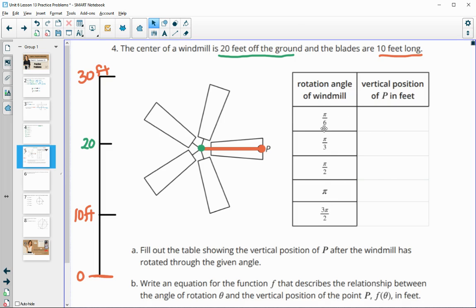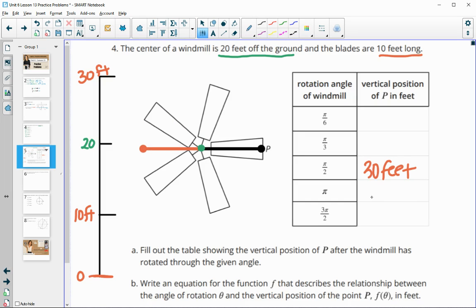So we want to come up with some of these different measures here. So where is this point going to be at pi over 6, at pi over 3, at pi over 2, at pi, and at 3 pi over 2? At pi over 2, it's directly at the top. So at pi over 2, it's going to be at 30 feet. At pi, it's going to be directly on the edge here, but in line with the center. So that means it's going to be at 20 feet. And at 3 pi over 2, it's going to be at the very bottom of the windmill, so at 10 feet.